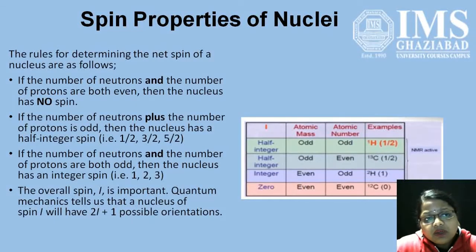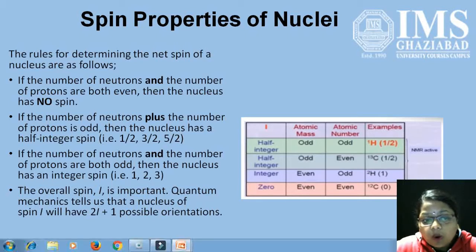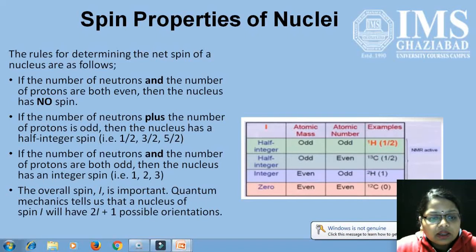Coming to the spin properties of the nucleus, the rules for net spin are: if the number of neutrons and the number of protons are both even, then the nucleus has no spin and we cannot study such nuclei with NMR spectroscopy. If the number of neutrons plus the number of protons is odd, then the nucleus has a half-integer spin, represented by 1/2, 3/2, or 5/2. If the number of neutrons and the number of protons are both odd, then the nucleus has an integer spin. The overall spin is represented by i, the spin quantum number, and the possible orientations a nucleus can have is given by 2i plus 1.